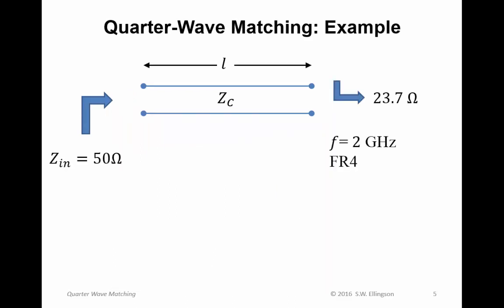So here's an example. In this example, I'd like to match 23.7 ohms to 50 ohms. I'm going to do this at 2 gigahertz. And I am once again going to implement this on FR4 circuit board material. So this is going to be a microstrip structure.